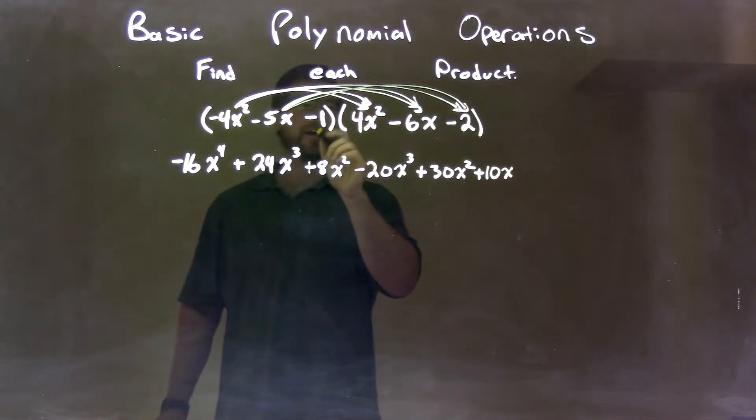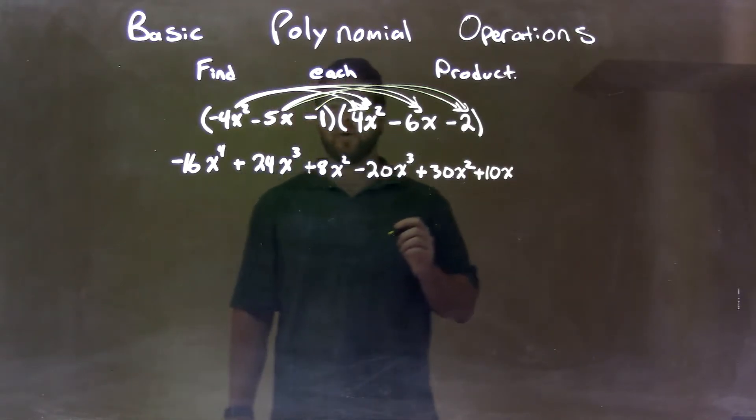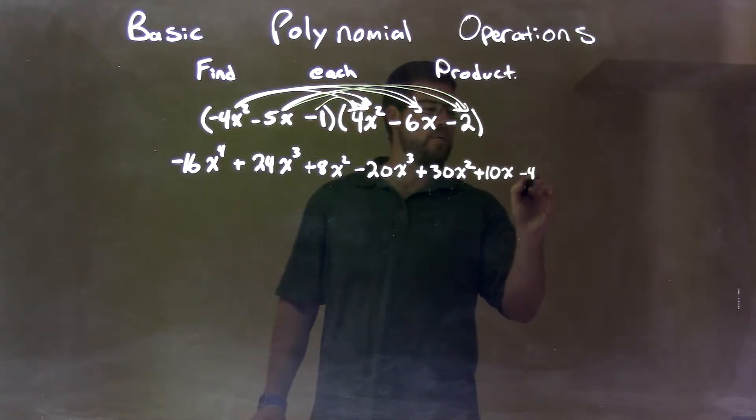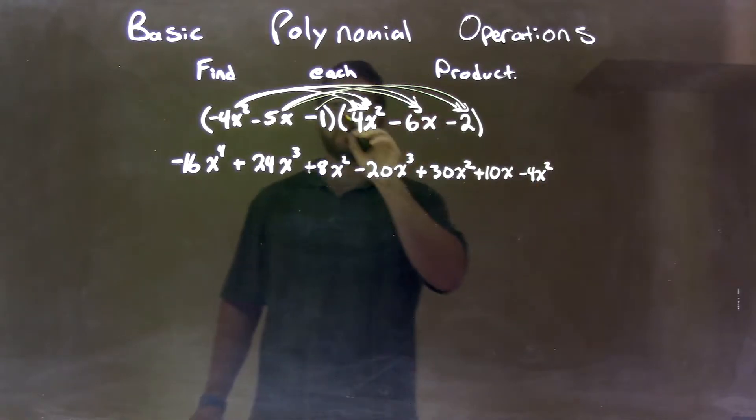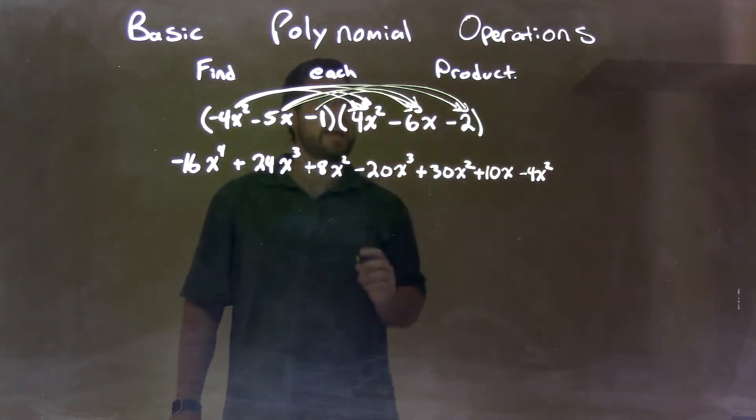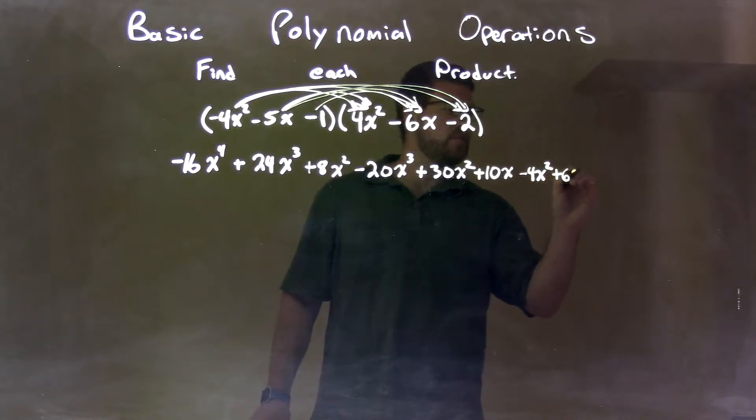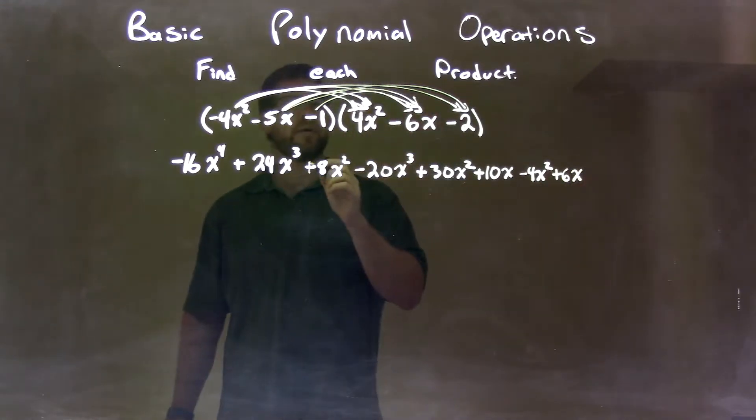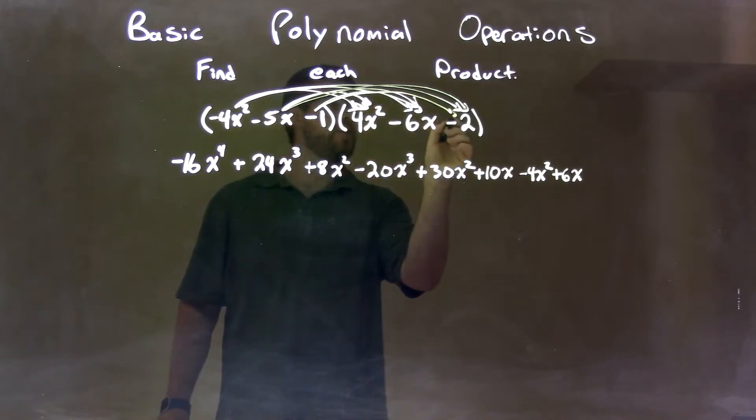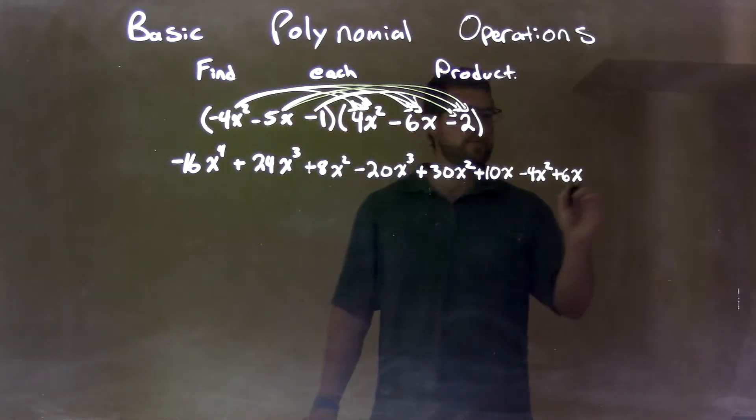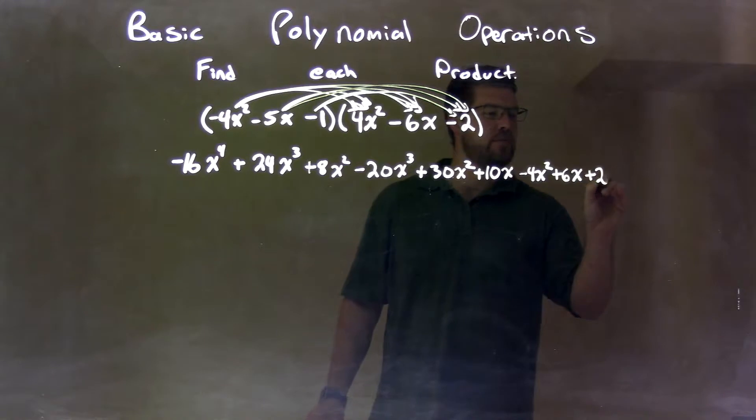And then, lastly, we have negative 1 that needs to be multiplied to all parts. Negative 1 times positive 4x squared is negative 4x squared. Negative 1 times negative 6 is positive 6x. And negative 1 times negative 2 is positive 2.